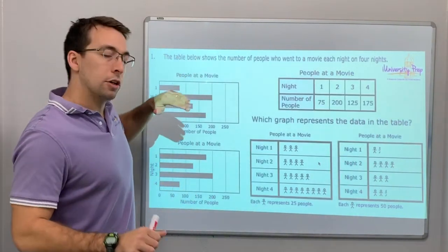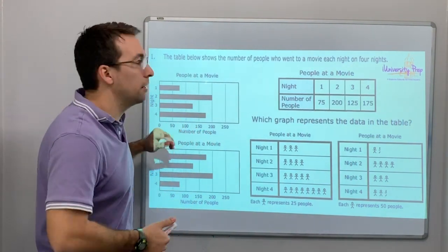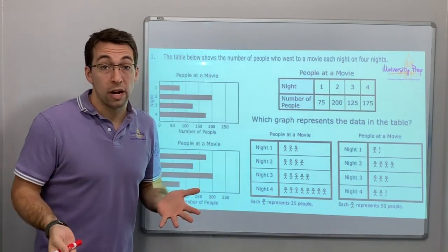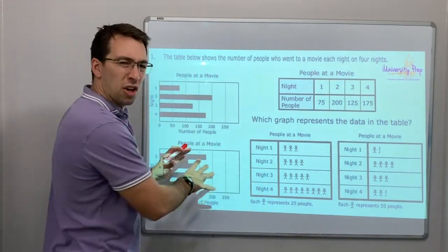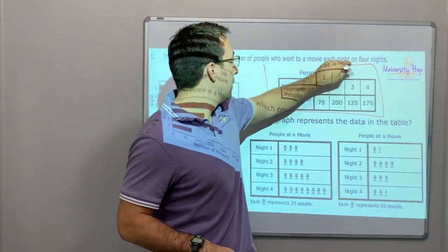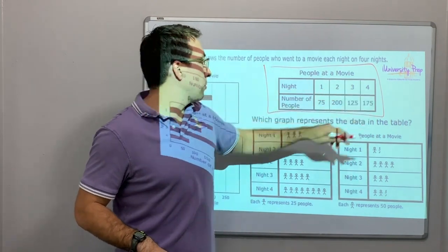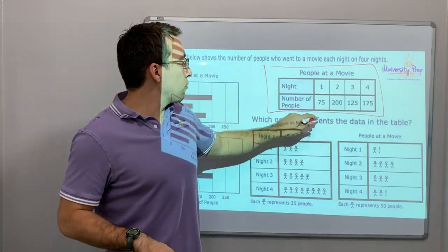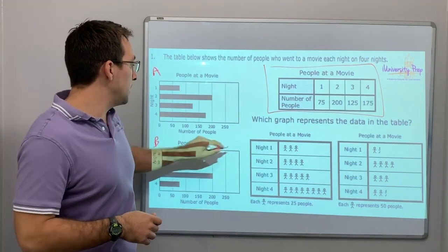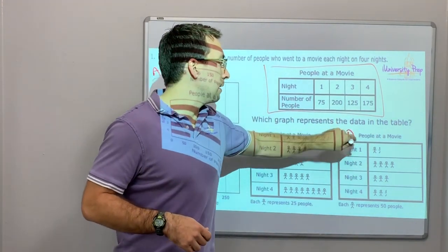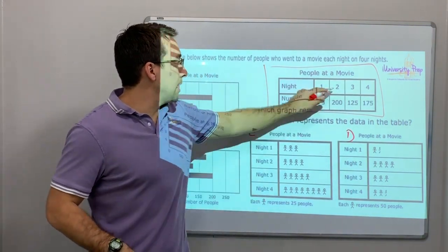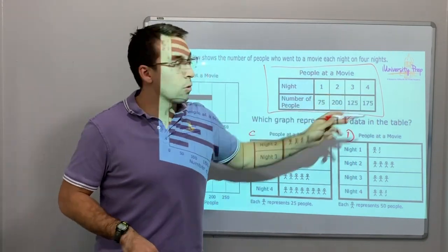Table 1 — we're going to do one question and then save the rest for the next video. Table 1 shows the number of people who went to a movie each night for four nights. Here is the data — here's the table. Night 1, Night 2, Night 3, Night 4. Which graph represents the data in the table? The options are A, B, C, and D. Night 1 has 75 people, Night 2 is 200, Night 3 is 125, Night 4 is 175.